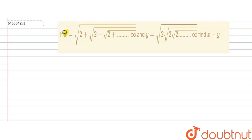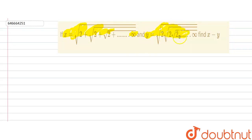In this question, we are given that x is equal to √(2 + √(2 + √(2 + ...))) up to infinity, and y is equal to √(2 · √(2 · √(2 · ...))) up to infinity, and we need to find x minus y.